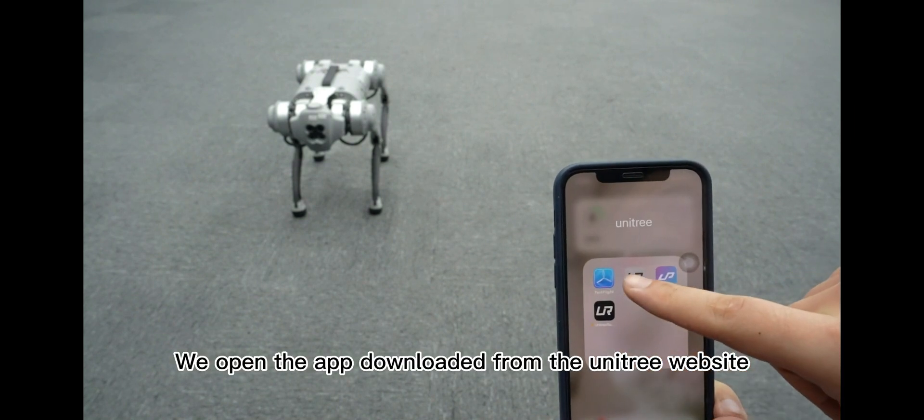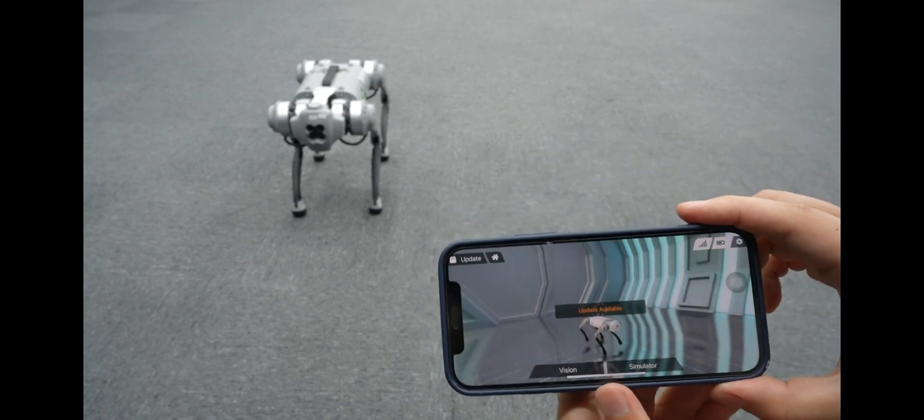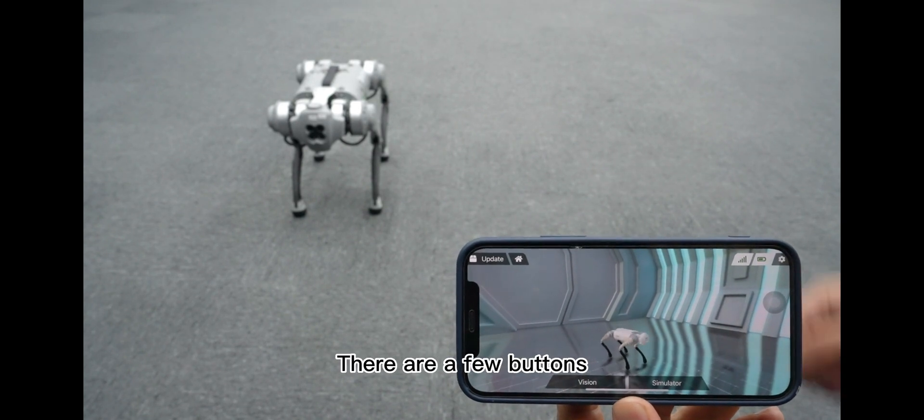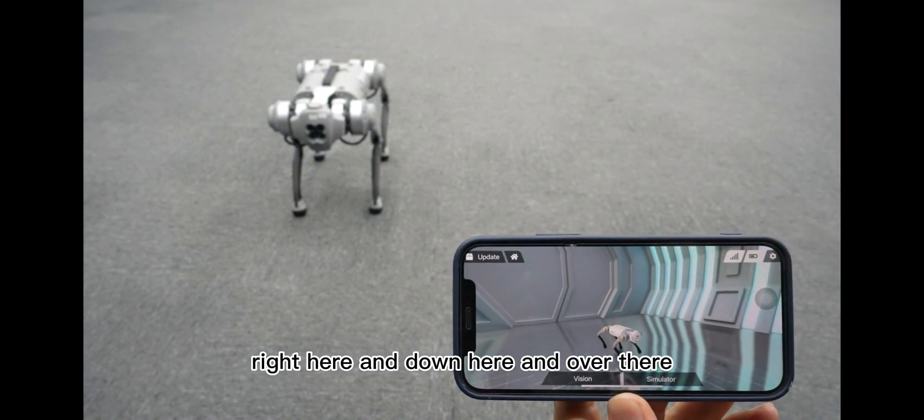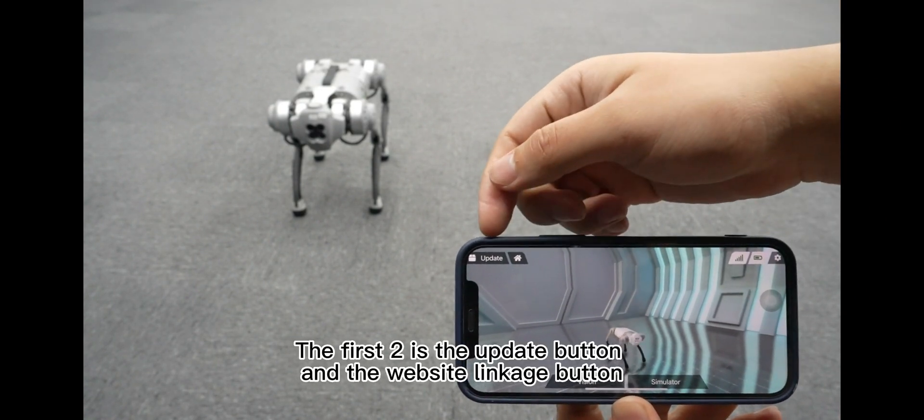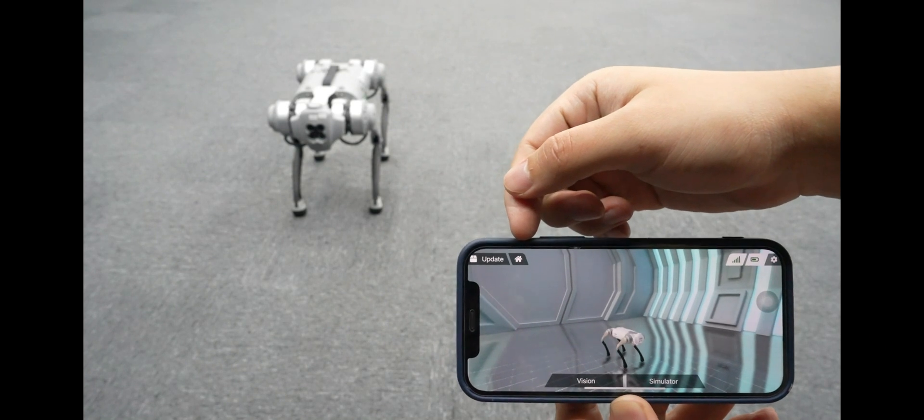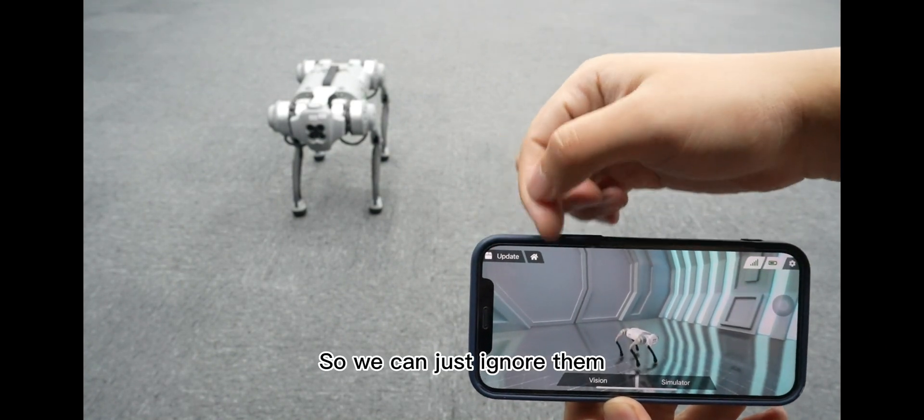We open the app downloaded from the Unitree website. As you can see here, there are a few buttons, right here, and down here, and over there. So the first two is the update button and the website linkage button. We're usually not using them, so we can just ignore them.